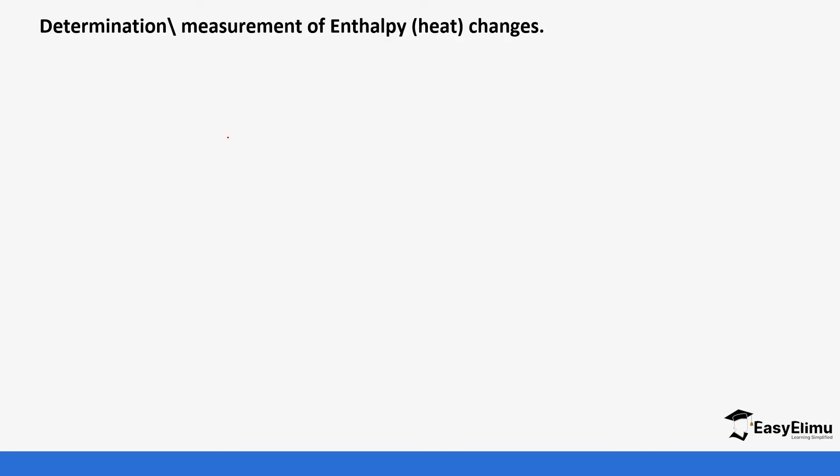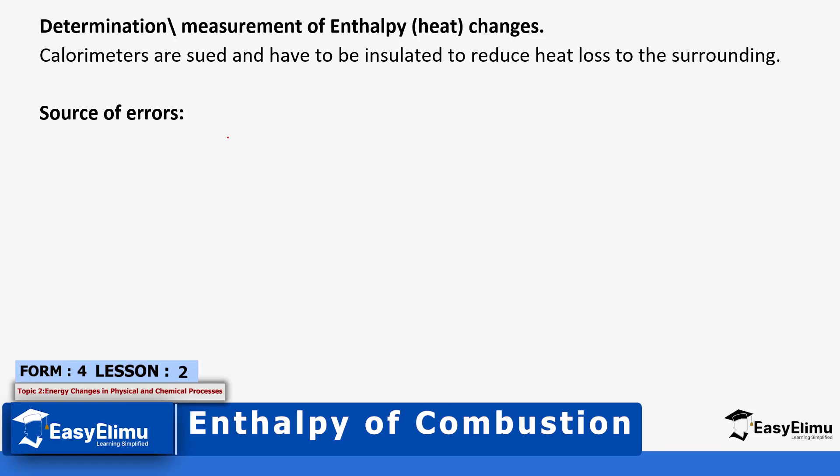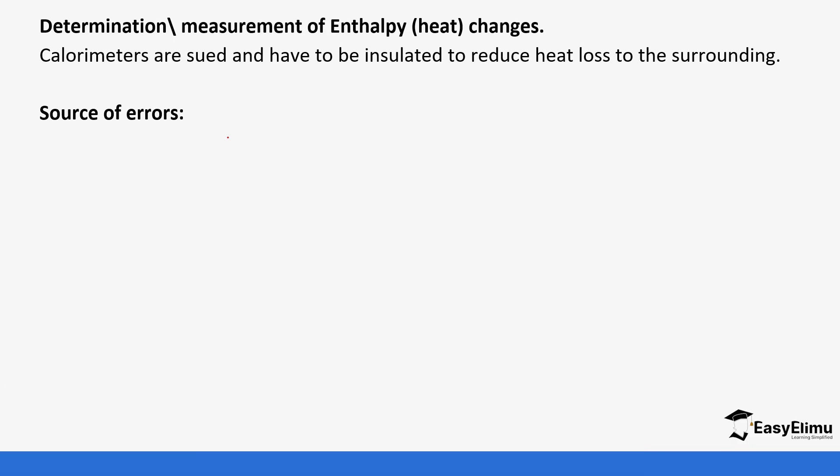When we are measuring enthalpy changes we usually use an instrument called a calorimeter and it's usually insulated to reduce heat loss to the surrounding. You are going to be doing different experiments in the course of this topic and some of the values you get at the end of a calculation or a practical will have a difference in comparison to the theoretical value. This is because there are some sources of errors in these reactions and one of the sources of errors is heat loss to the surrounding.